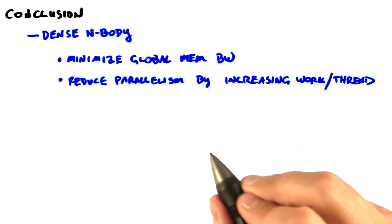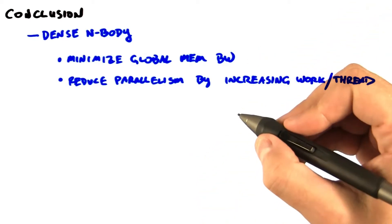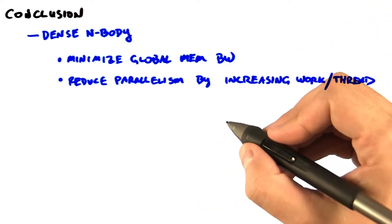Dense in-body. We learned two main lessons here. One is the importance of minimizing global memory bandwidth.